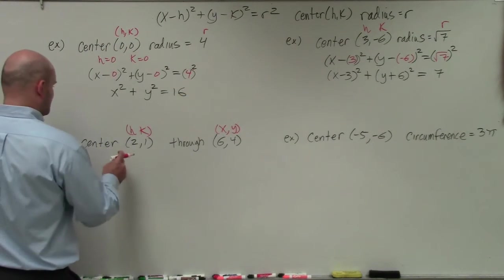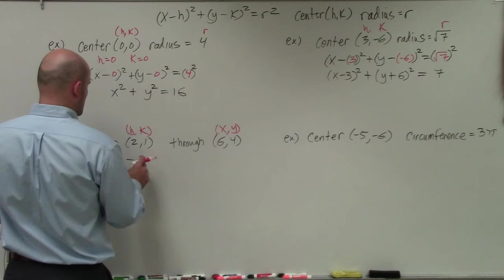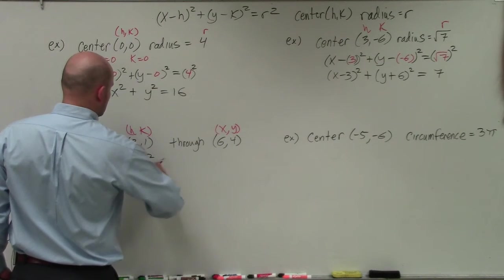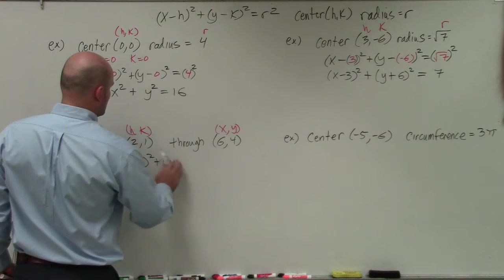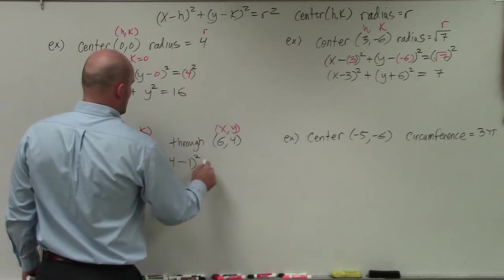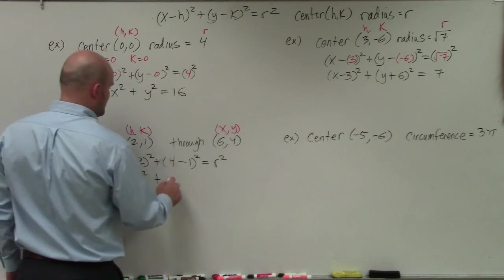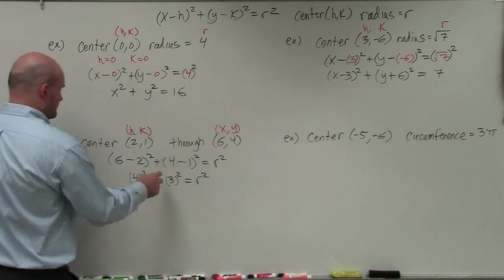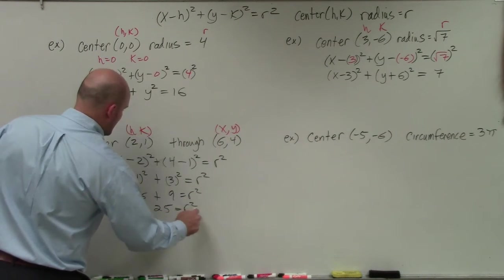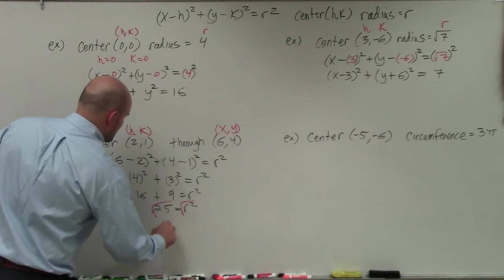So I have x, which is now 6, minus h, which is 2, squared. And that's going to equal, plus y, which is 4. So the y-coordinate is equal to 4, minus k, which is 1, squared, equals r squared. So 6 minus 2 is going to be 4 squared, plus 4 minus 2 is 3, equals r squared. 4 squared is 16, plus 3 squared is 9, equals r squared. Therefore, that's 25 equals r squared. That means take the square root of both sides.